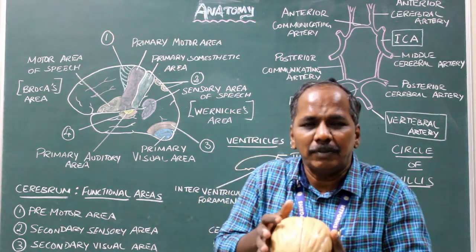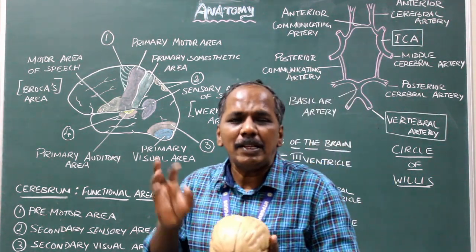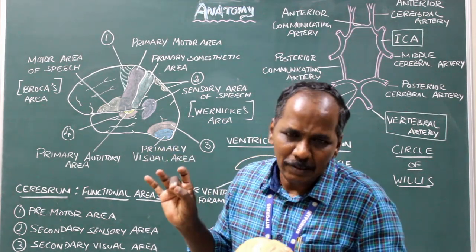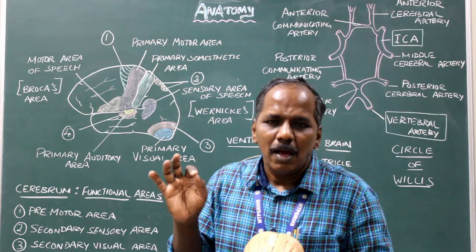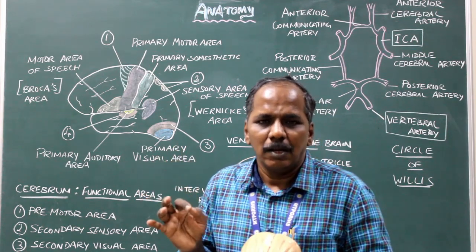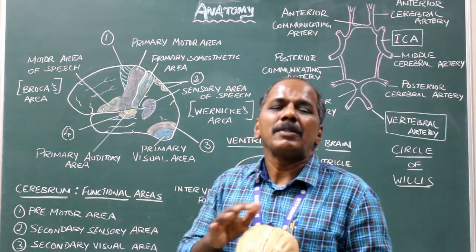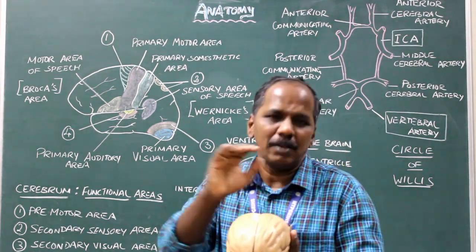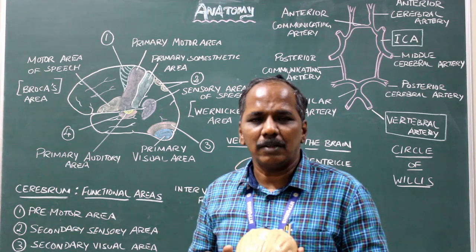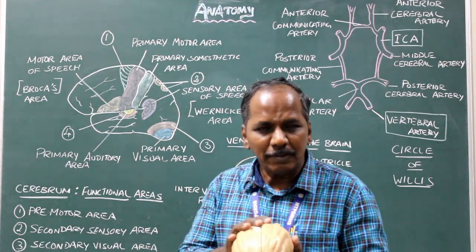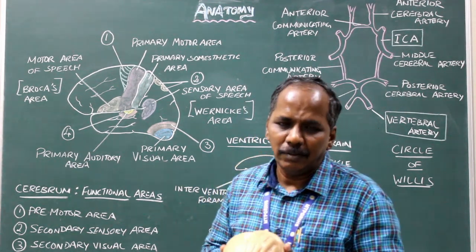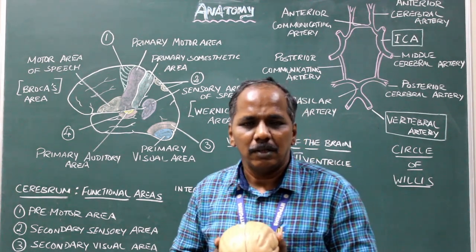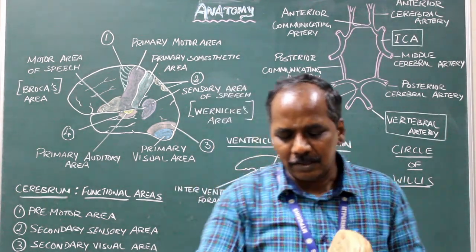The commissural fibers include: number one, corpus callosum; number two, anterior commissure; number three, posterior commissure; number four, habenular commissure; number five, hippocampal commissure. These are the commissural fibers present in the white matter of the cerebrum.